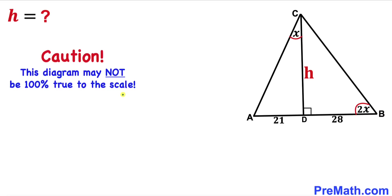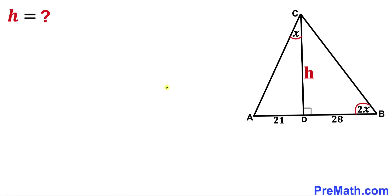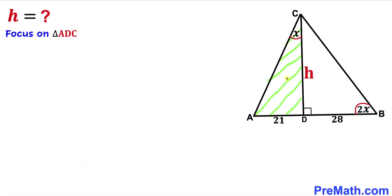Please keep in mind that this figure may not be 100% true to scale. Let's go ahead and get started with the solution. Here's our very first step: let's focus on this right triangle ADC. We know that this angle is 90 degrees.